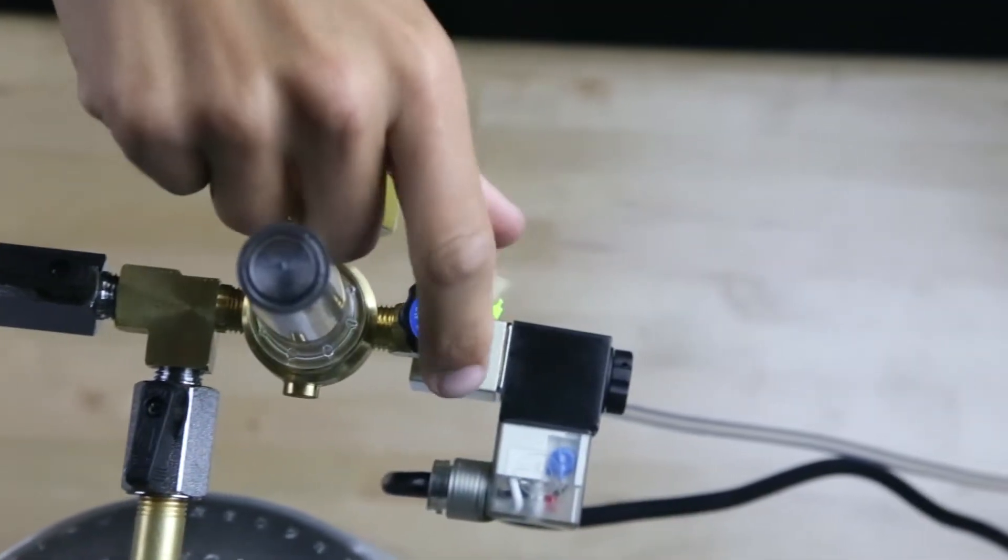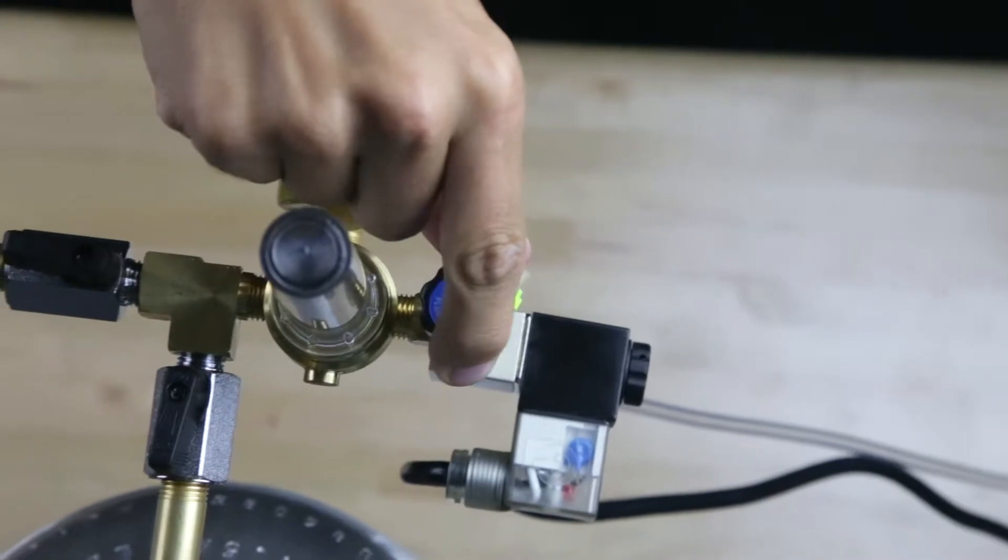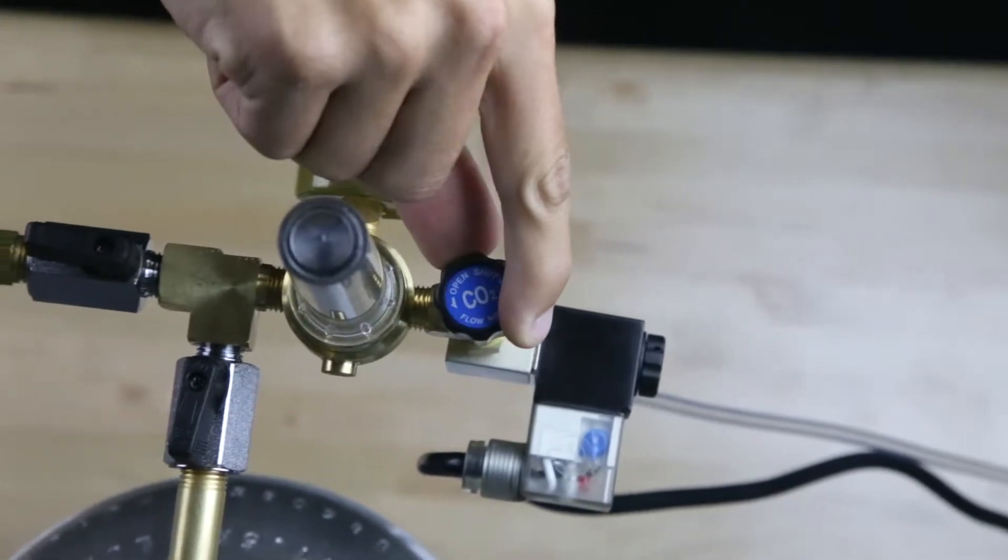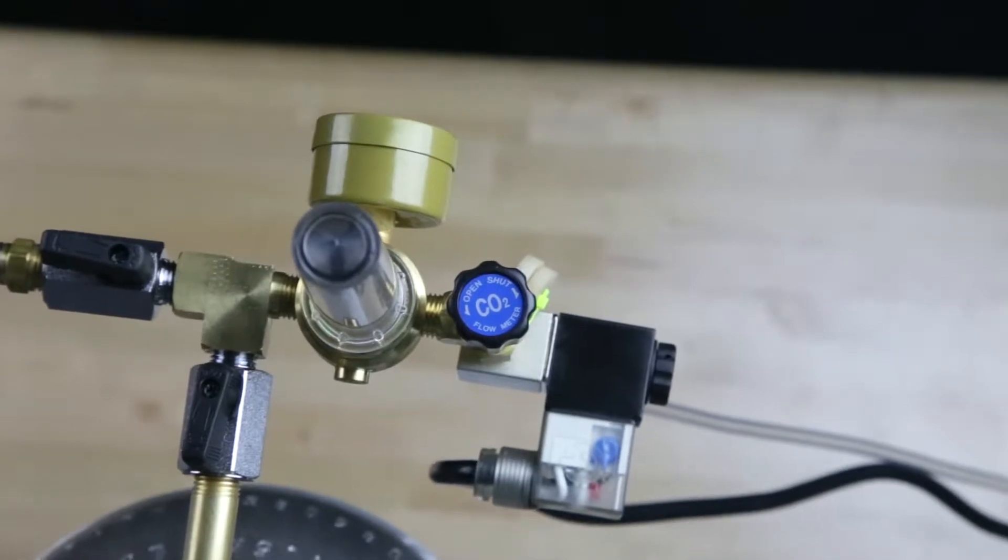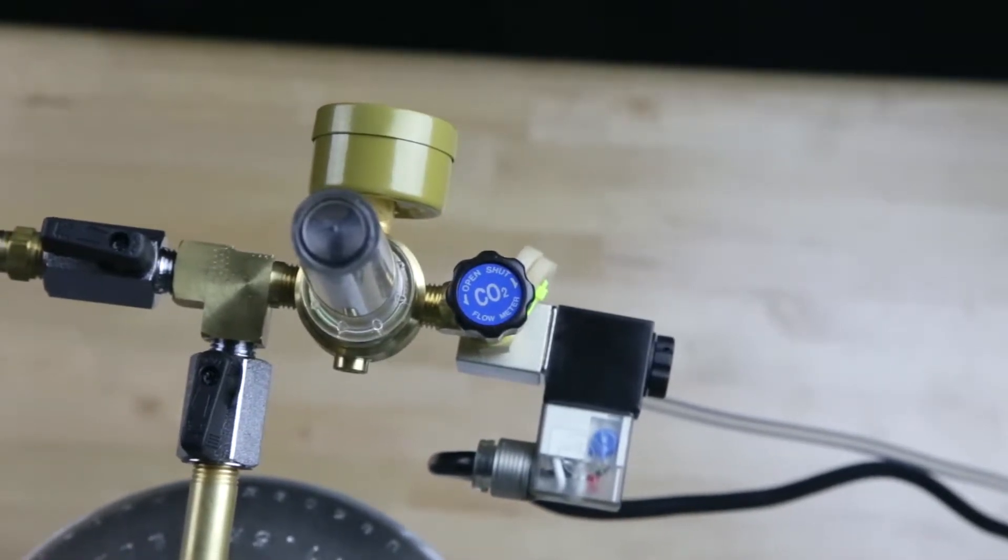Before opening the valve on the CO2 tank, slightly open the flow adjustment knob on the regulator to relieve the pressure from the gas being released. Failure to do this can permanently damage the unit and void the warranty.